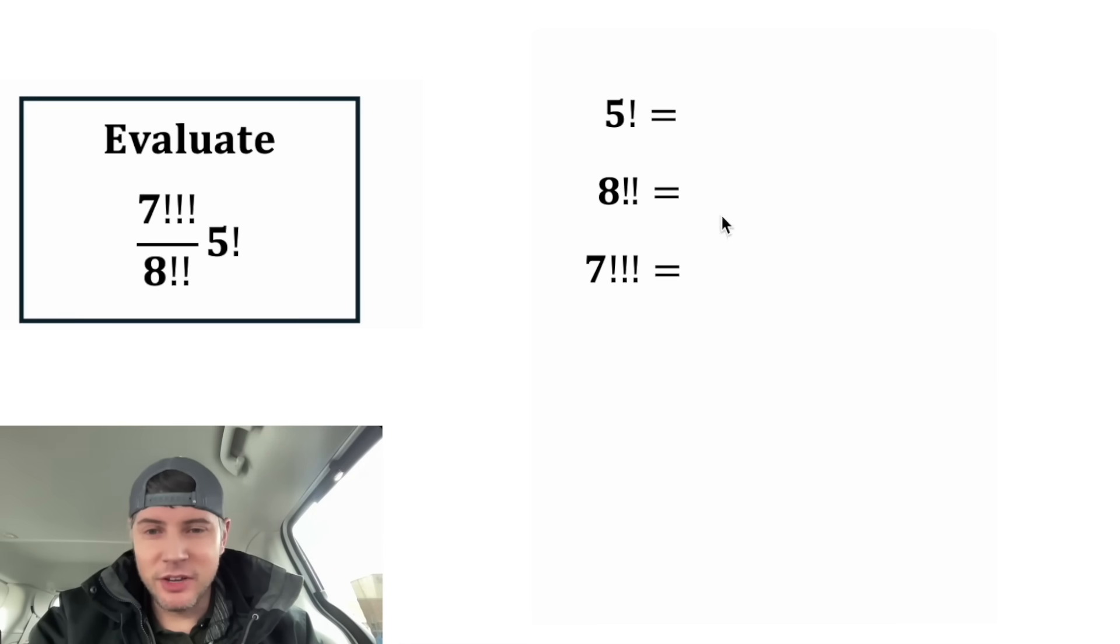First, let's find the values of each of these. 5 factorial means 5 times 4 times 3 times 2 times 1. And you'll notice that each of these decreases by 1 each time.